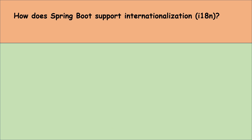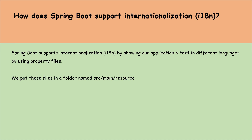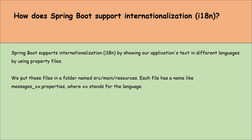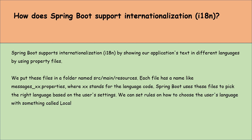How does Spring Boot support internationalization? Spring Boot supports internationalization by showing our application's text in different languages using properties files. We put these files in the src/main/resources folder. Each file has a name like messages_xx.properties, where xx stands for the language code. Spring Boot uses these files to pick the right language based on user settings. We can set rules on how to choose the user's language with something called LocaleResolver. This way our application can speak to users in their language, making it more user-friendly for people from different parts of the world.